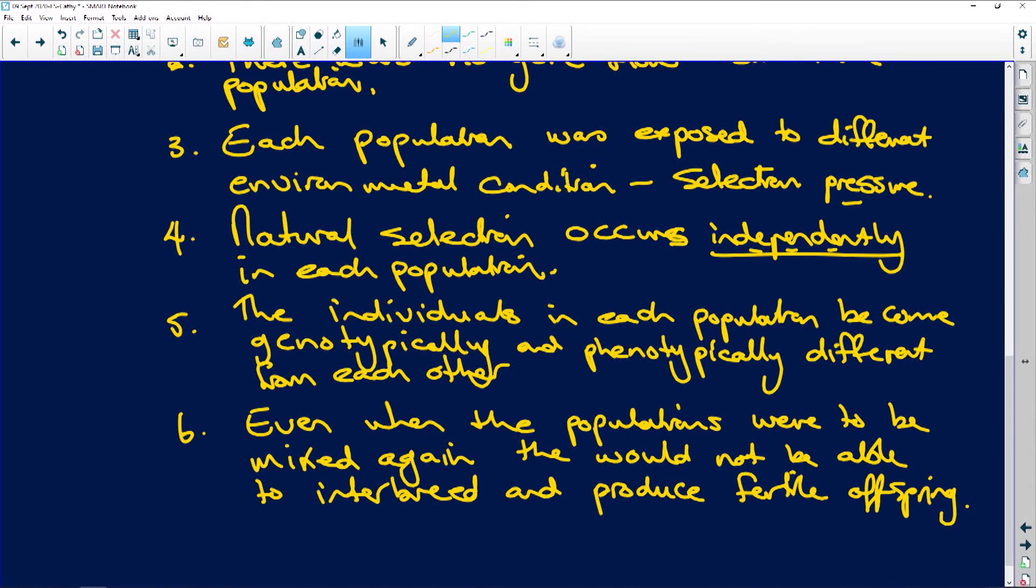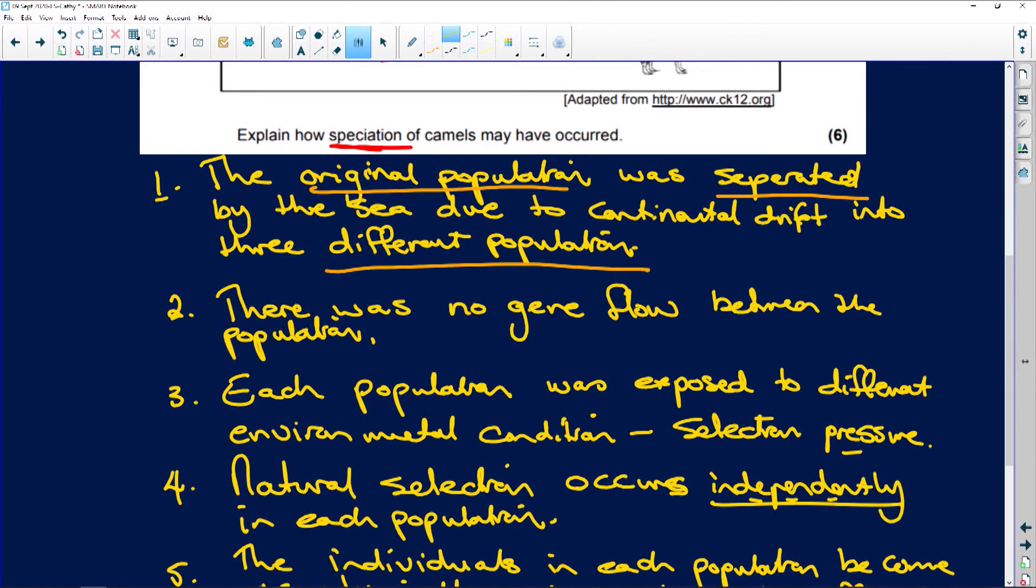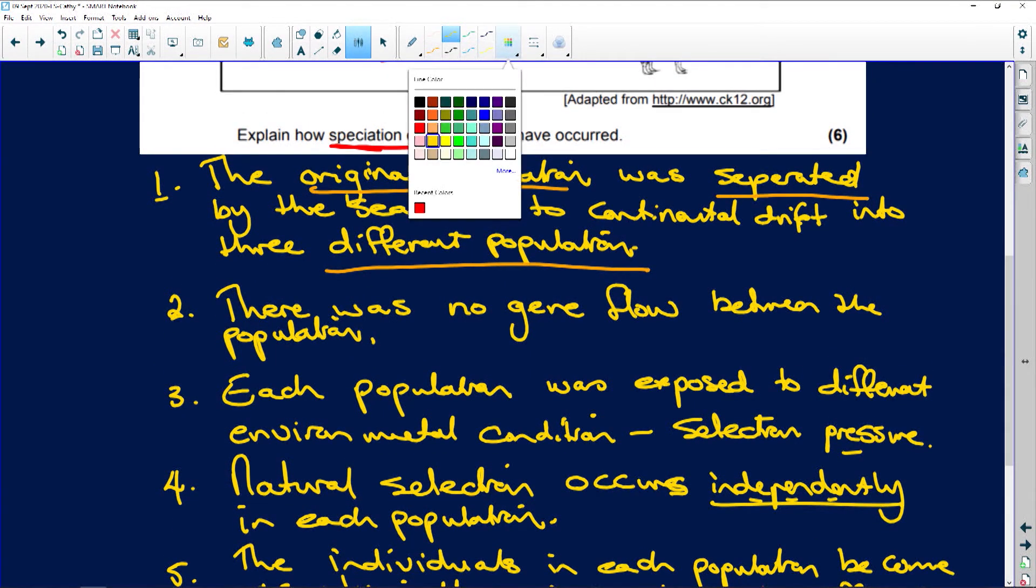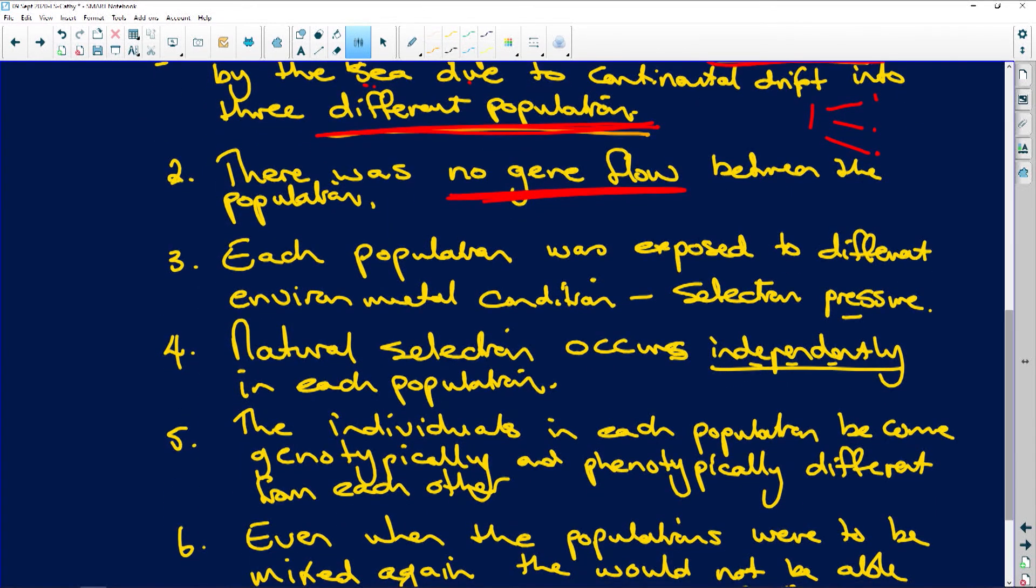Okay, so let's go back. Here are your important things that you have to put in. The original species separates - why? The sea, a mountain, doesn't matter - and that splits them into different populations. So you've got one that splits into different populations. Then there was no gene flow - in other words, they can't mate with each other so the genes can't flow through them.